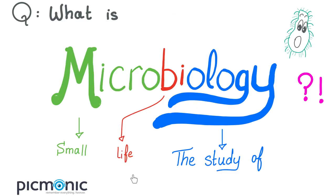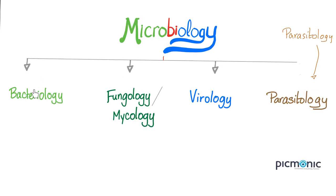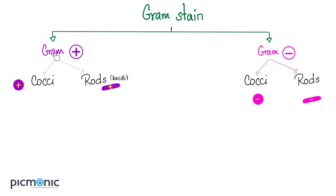Microbiology is the study of small life — bacteria, fungi, viruses, parasites — giving us bacteriology, mycology, virology, parasitology. How do we name bugs? Kingdom, phylum, class, orders, family, genus, species. So when I say Staph aureus, Staph is the genus and aureus is the species. Gram stain includes gram-positive and gram-negative, each divided into cocci and rods.